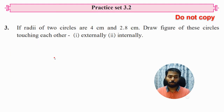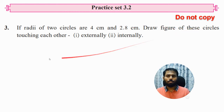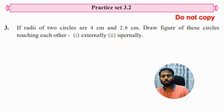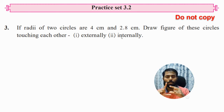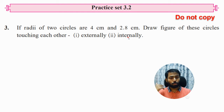Question three is a construction question — you don't solve anything but you should be able to construct two touching circles. Take out your compass from your geometry box. The question says the radii of two circles are 4 cm and 2.8 cm — draw figures of these circles touching each other, first externally and then internally. I'm not going to tell you the steps — use your own thinking and try to problem solve this. I'll wait five seconds for you to pause the video and try drawing.